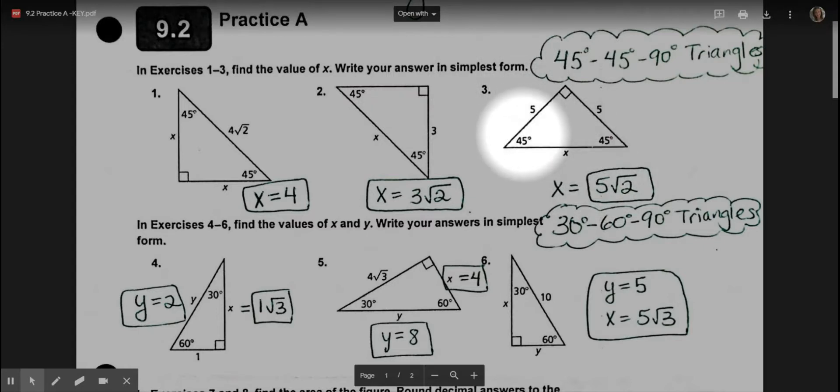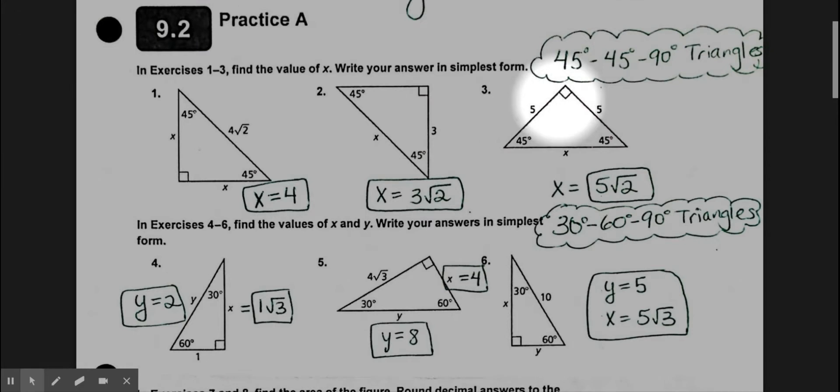Okay, so the third question: also a 45-45-90 triangle. We know the leg is 5, so the hypotenuse is simply 5 radical 2, just applying what's in the notes.